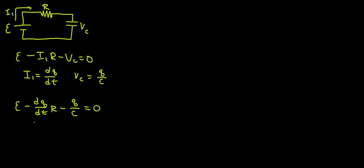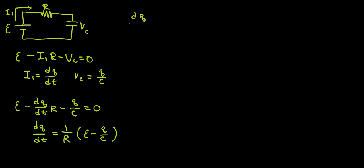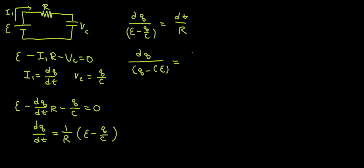Now I'm going to do separation of variables, and I'm going to rewrite the equation as dQ/dt equals 1 over R times (epsilon minus Q over C). So I can rewrite this and do cross multiplication, and I get dQ over (epsilon minus Q over C) equals dt over R. Simplifying and factoring out a negative 1 over C, I get dQ over (Q minus C·epsilon) equals negative dt over RC.